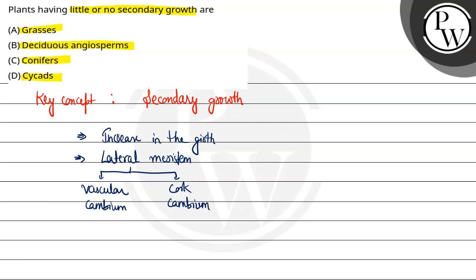Yeh dono cambium secondary growth ke liye responsible hote hai. And secondary growth hoti hai stem aur root me in case of gymnosperms and dicots. Dicots kya hai — angiosperms hai.